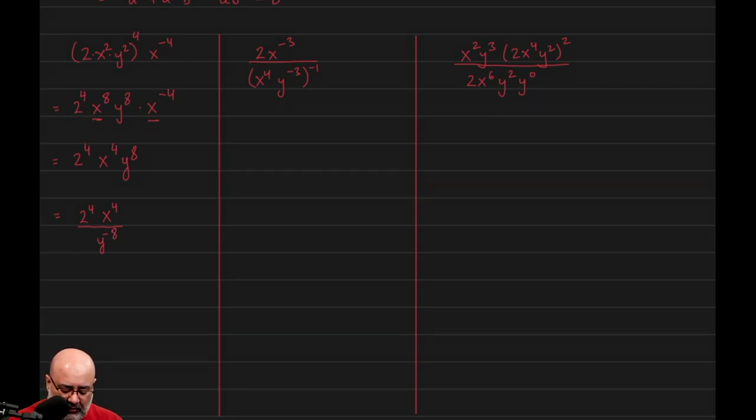So you'd get full credit for this if you wanted to rewrite 2 to the 4th as 16, x to the 4th over y to the negative 8 on your paper exam, then that would be fine as well.